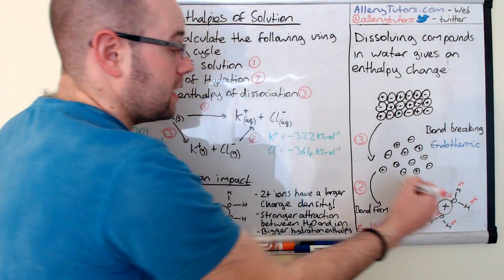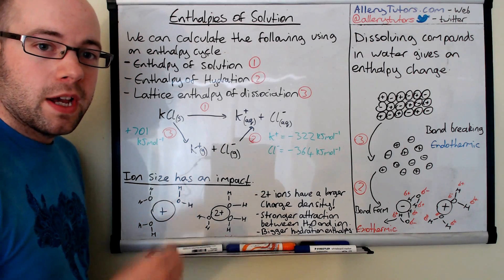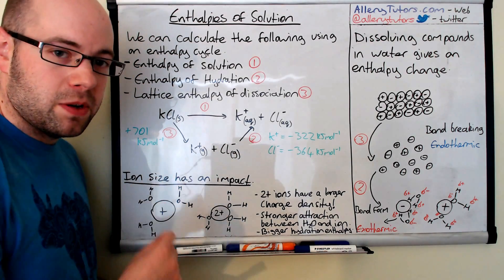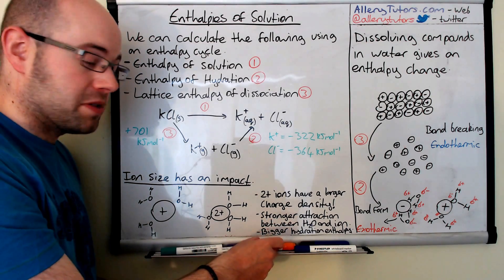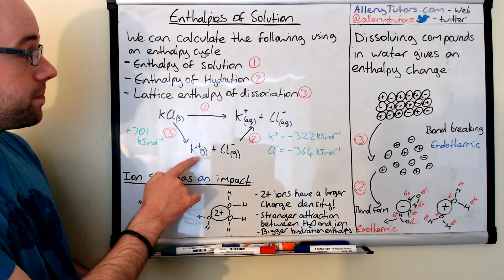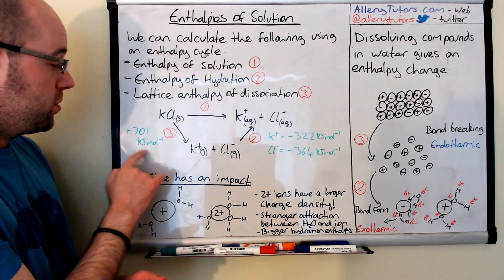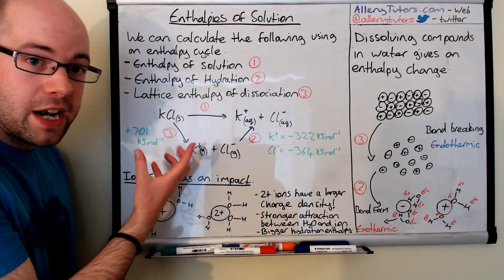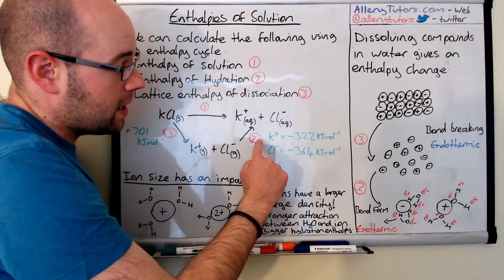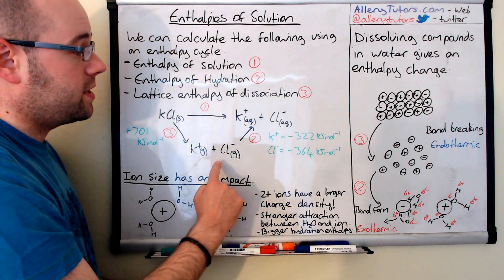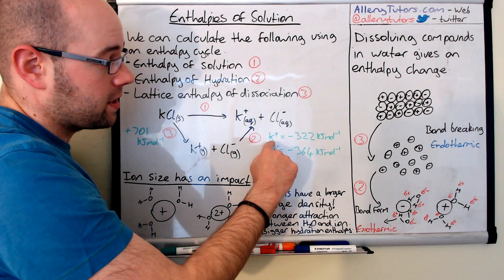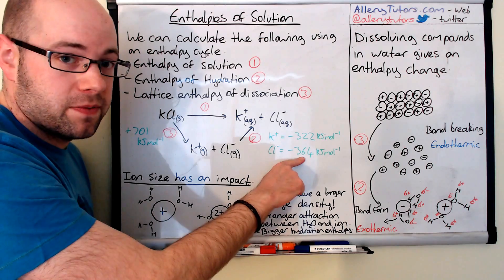So we either go directly to the ions in the aqueous state or we can break the ions first. This is the lattice enthalpy of dissociation. Then we can hydrate our gaseous ions. You can see here the ones with gaseous phase to form aqueous ions. Now I've put the enthalpy values in here and you'll get these in the exam if they expect you to calculate it. This is plus 701 and these two here for potassium chloride, the enthalpy of hydration is minus 322 and minus 364.